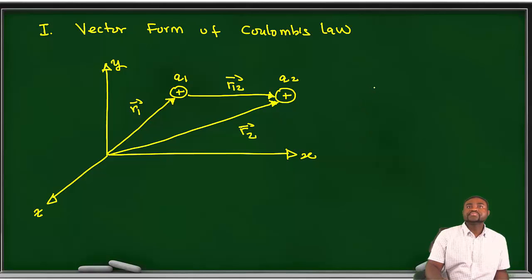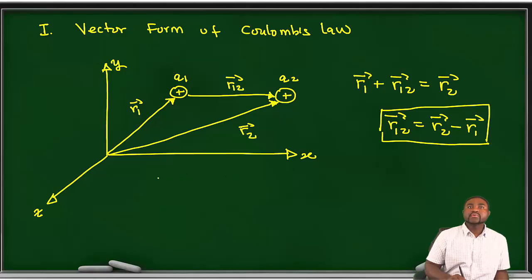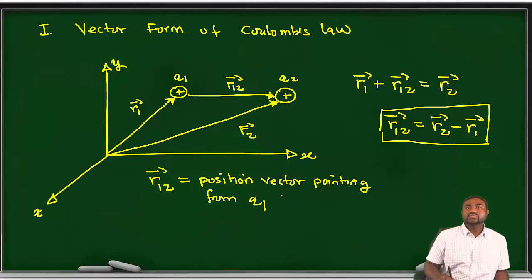So if you look at this diagram, you will see that R1 plus R12 will be equal to R2. This means that R12 is equal to R2 minus R1, where R12 simply is the position vector pointing from Q1 to Q2.